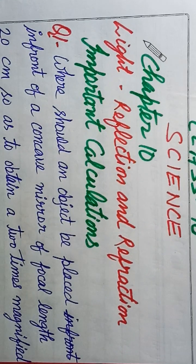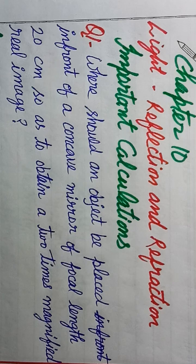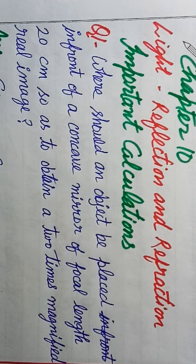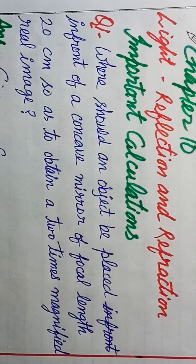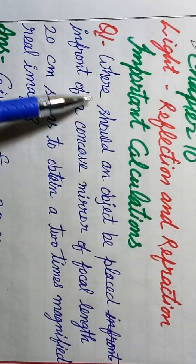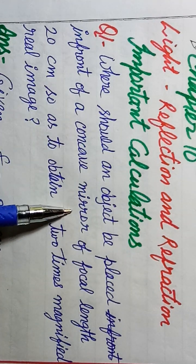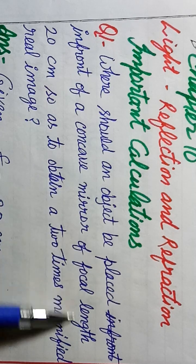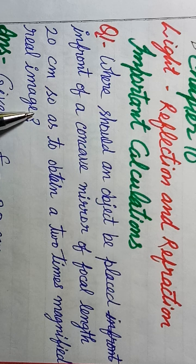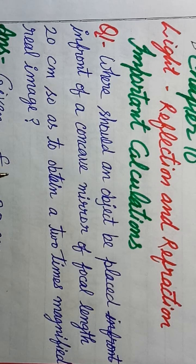Q1: Where should an object be placed in front of a concave mirror of focal length 20 cm so as to obtain a two times magnified real image? We have the magnification and focal length given.